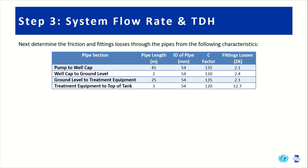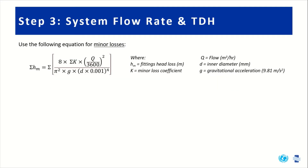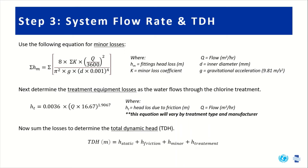This table shows the various pipe lengths, pipe diameters, C factors, and fitting loss sum-of-coefficients for different sections of piping in our system: from the pump to the well cap, the well cap to ground level, ground level to treatment equipment, and treatment equipment to the top of tank. Equations are shown for calculating friction losses and minor losses — hit pause if you'd like to look at those in more detail. There is also an equation for treatment losses. Finally, we add all of these losses together to determine our total dynamic head.